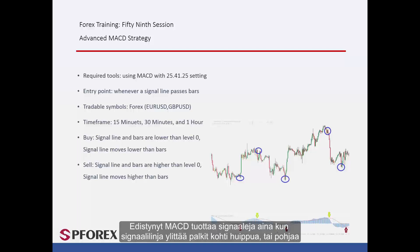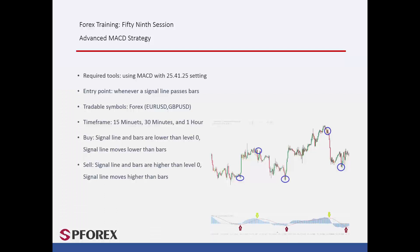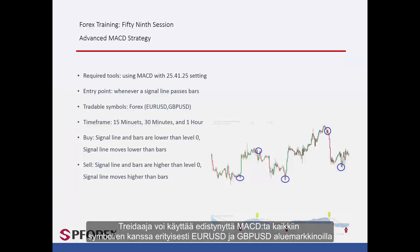Advanced MACD generates signals whenever the signal line crosses the bars towards the top or bottom. A trader can apply Advanced MACD on all symbols with range markets, especially on EUR against USD and GBP against USD.